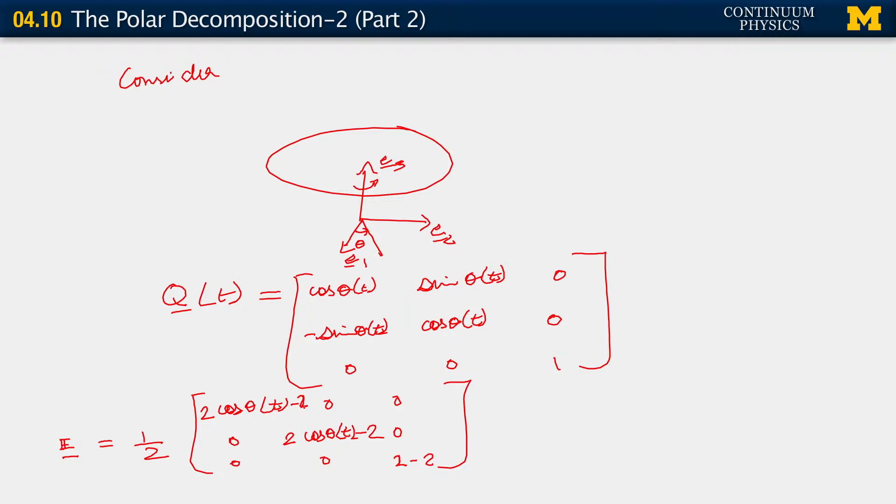Now as theta evolves, it's not difficult to see that as theta departs from 0, both the diagonal terms in the 1,1 and 2,2 positions turn out to be very non-zero. If you have an angle of theta equals pi by 4, that turns out to be of the order of root 2 minus 2.